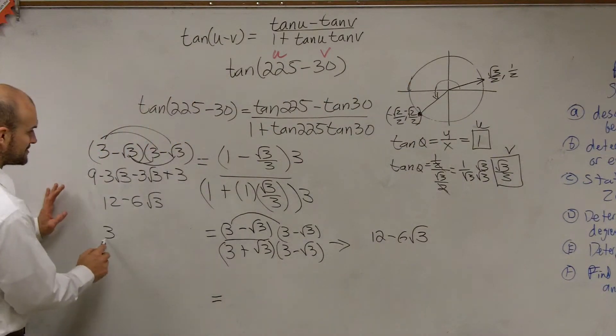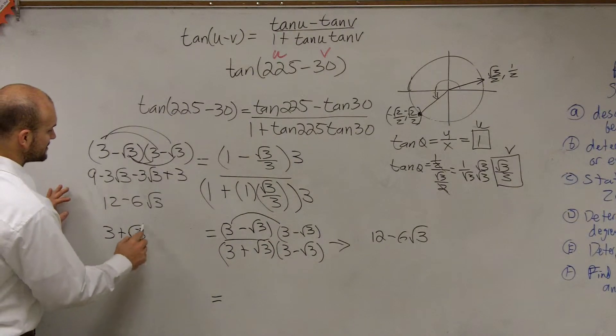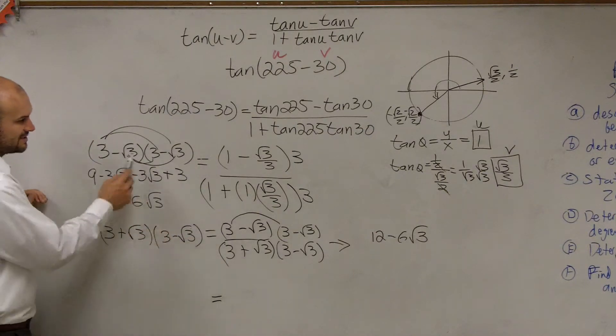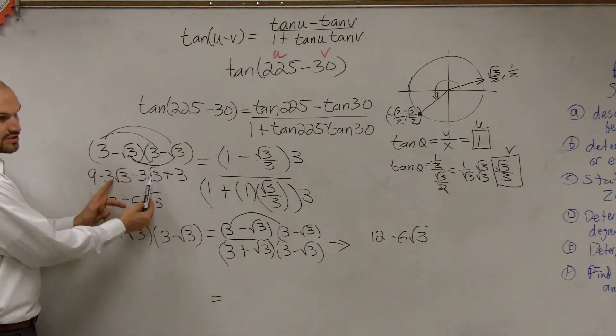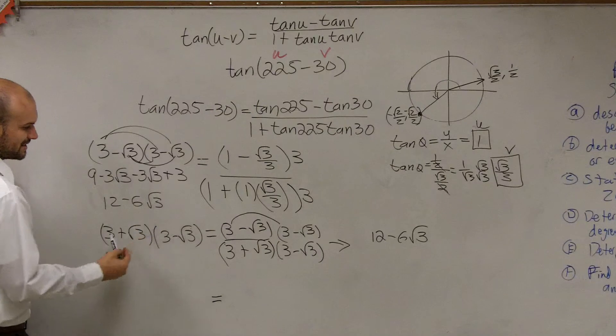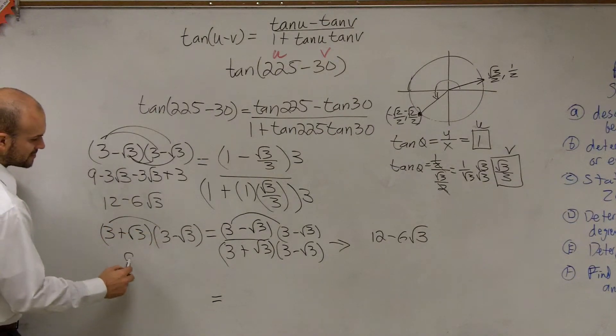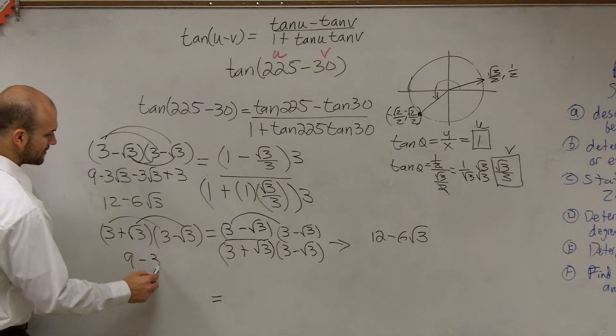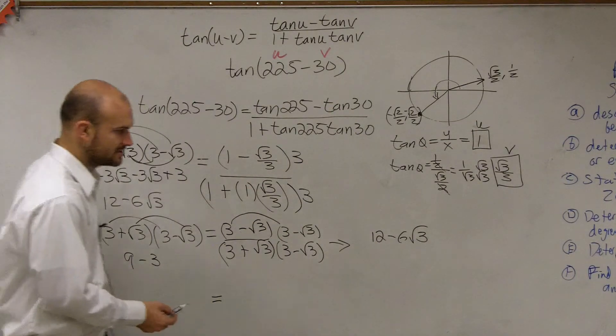If I was going to FOIL the bottom two, remember this is a difference of two squares. I don't need to do everything because the two middle terms are going to cancel out. So I can just do the first two, which is 9. And then I can just do the last two, which is going to be minus 3, which is equal to 6.